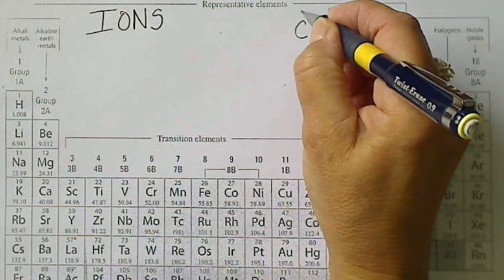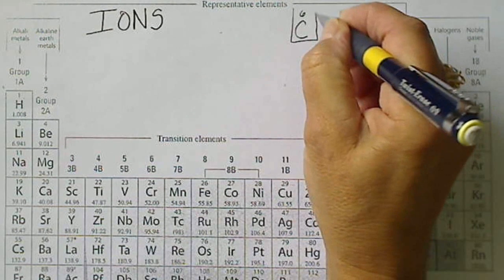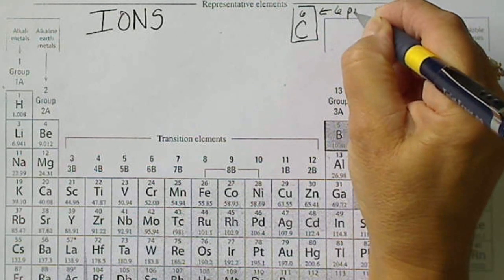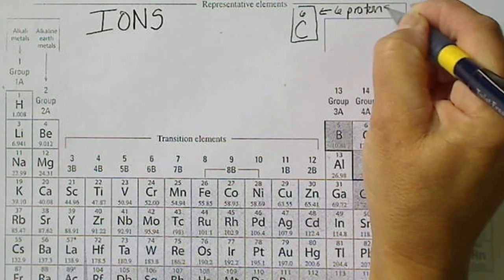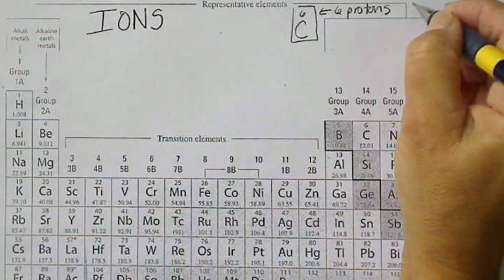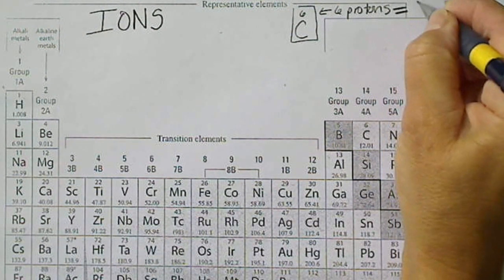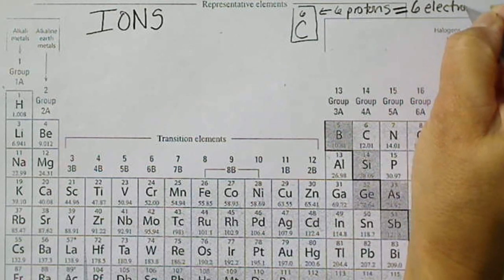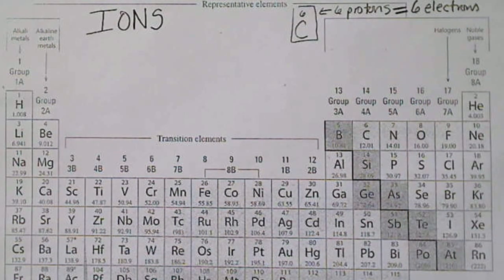Recall that we looked at carbon, and from the atomic number we know that carbon has six protons - that's what makes the atom carbon - and it also is going to have six electrons because the number of protons equals the number of electrons.